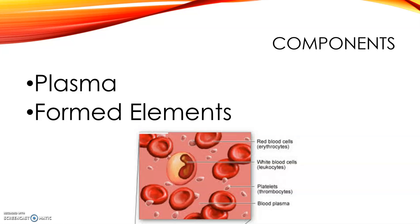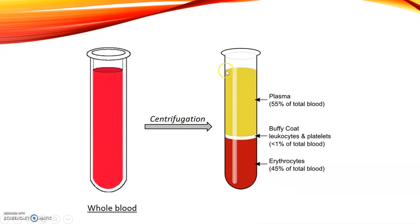Let's start off talking about plasma. You can see here that the plasma is the yellow color once blood has been centrifuged. It makes up about 55% of the total blood volume. Then we have a little buffy coat, which is less than 1% of the total blood — that's our white blood cells or leukocytes and our platelets. And then we have our red blood cells or erythrocytes, which is 45% of the total blood.